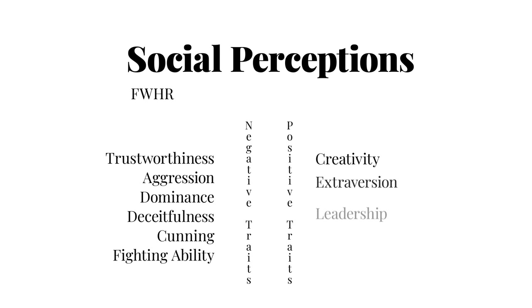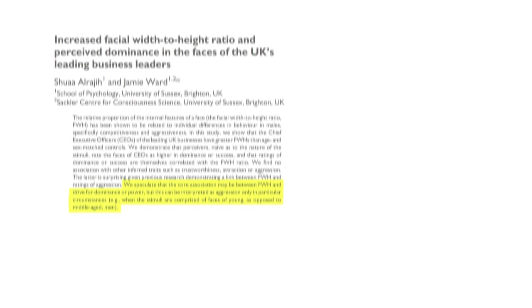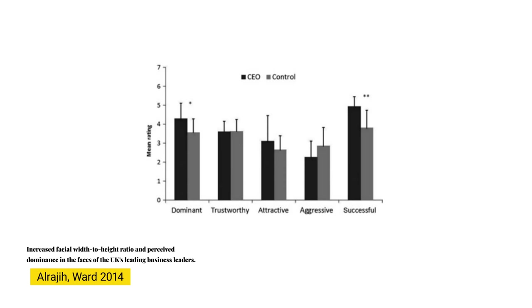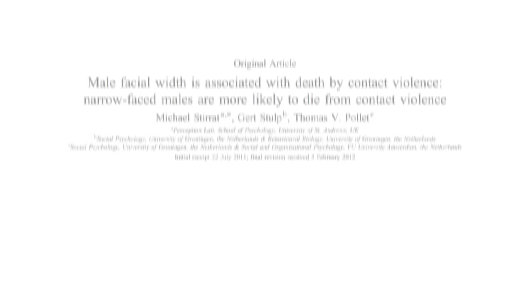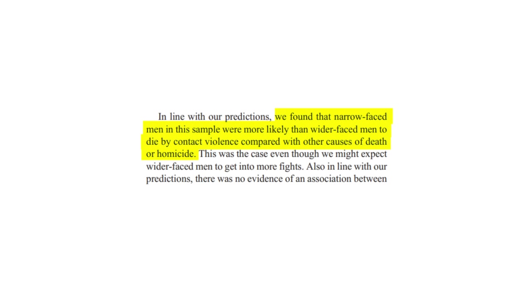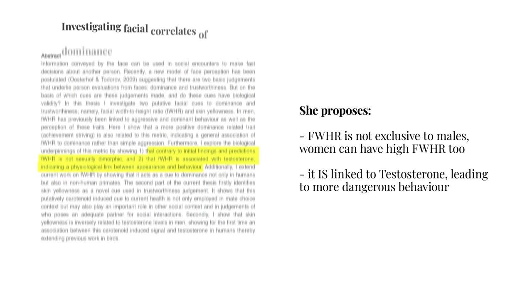The resounding idea in FWHR research has been that it is associated with aggression, however this isn't necessarily true in the negative sense of the word. Ward and Al-Raji found that the strongest association FWHR seems to have is with dominance, especially tying into positive things like success and drive. CEOs in the UK had greater width to height ratios and were rated higher in dominance and success. Louis et al also found a similar trend between ratio and achievement drive within former US presidents. Research by Sterat et al found that wider-faced males are less likely to die from contact physical violence — perhaps something to do with facial width cueing aggressiveness and male dominance.